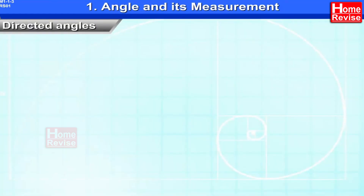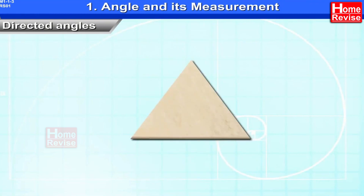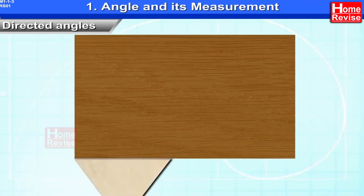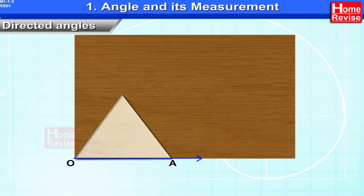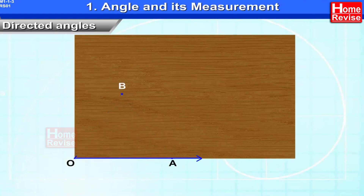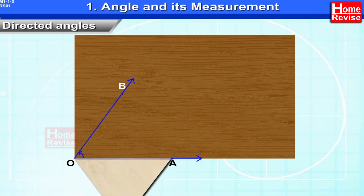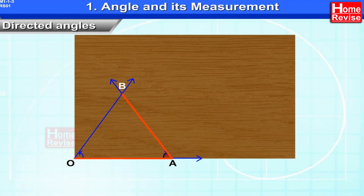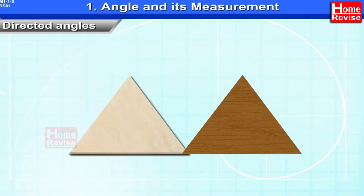Directed Angles. Suppose we have a triangular wooden piece on which we have to laminate a plywood of the same shape. We need to cut the plywood exactly of the same size and shape. Fix one side OA of the wood and rotate it about O till it occupies the position of ray OB. The angle obtained due to this rotation is directed angle AOB. Similarly, if you rotate ray OA about A till it reaches the position of ray AB, you get directed angle OAB. Using the concept of directed angle, we can cut the triangular piece of plywood.